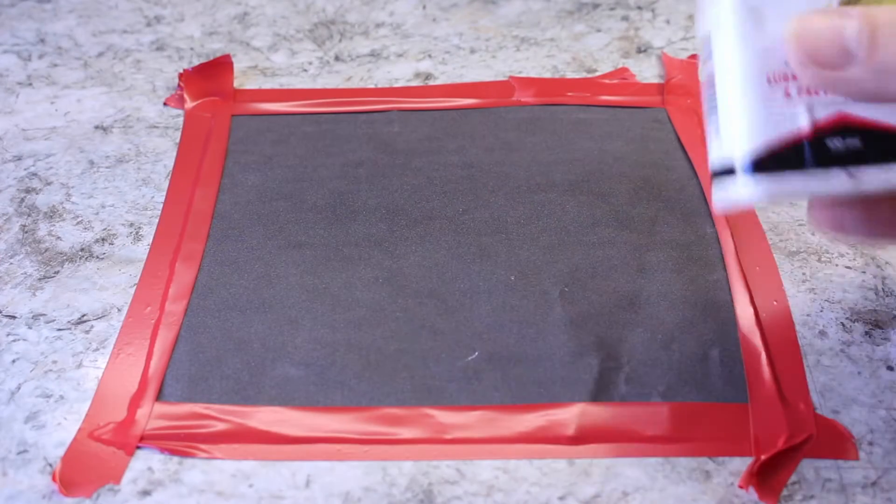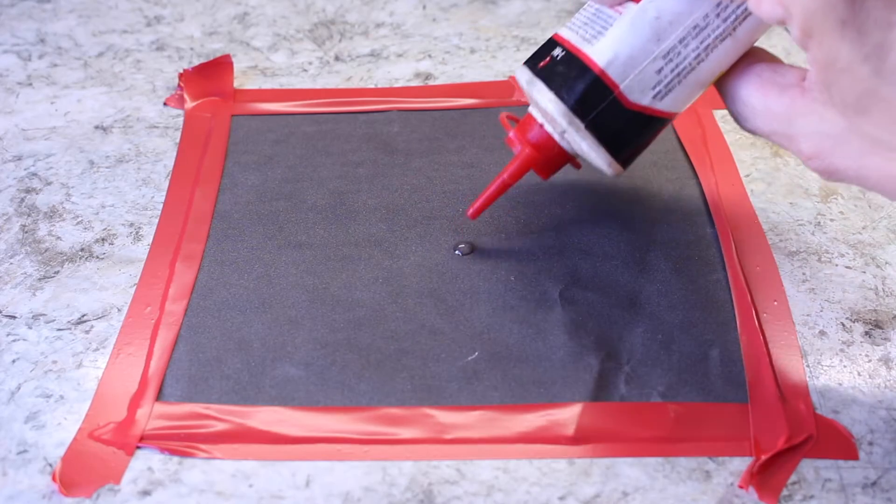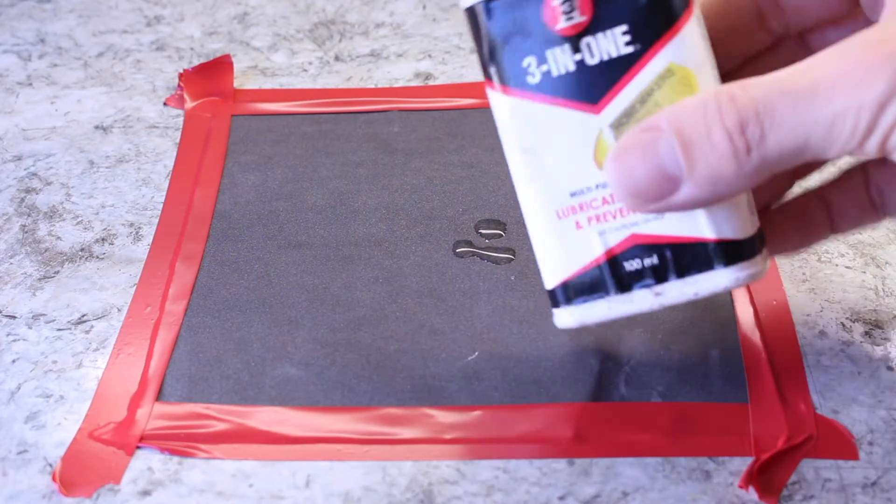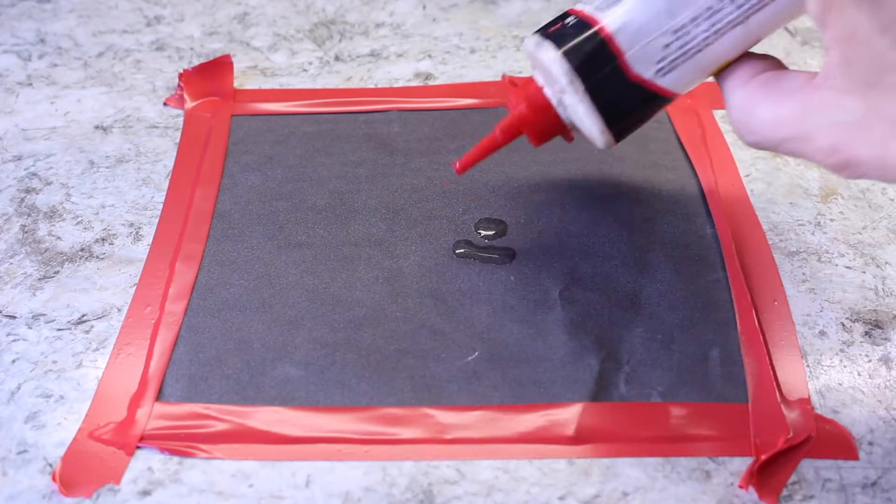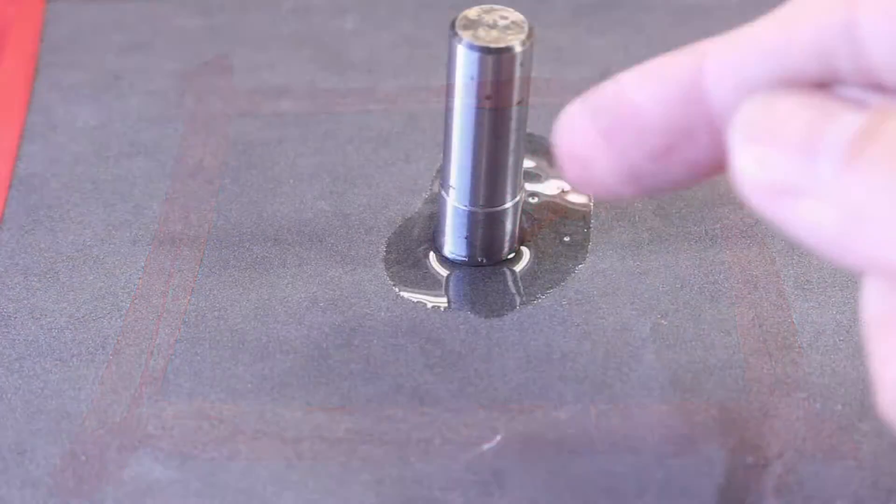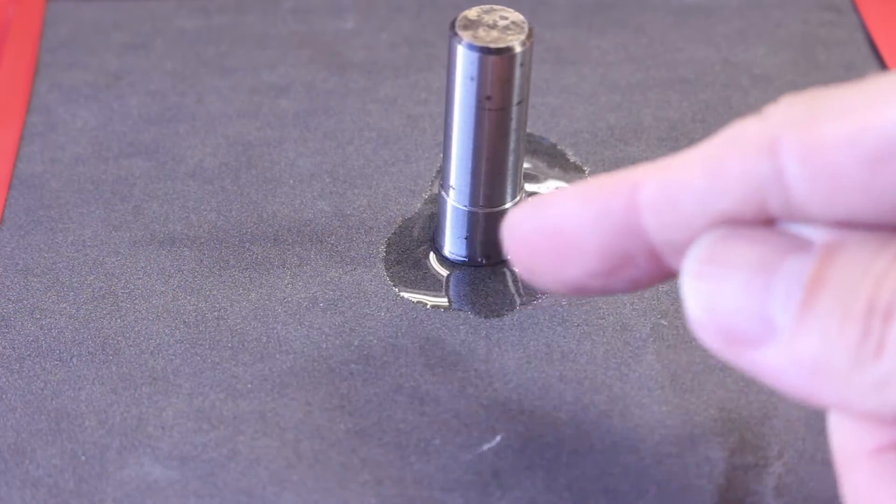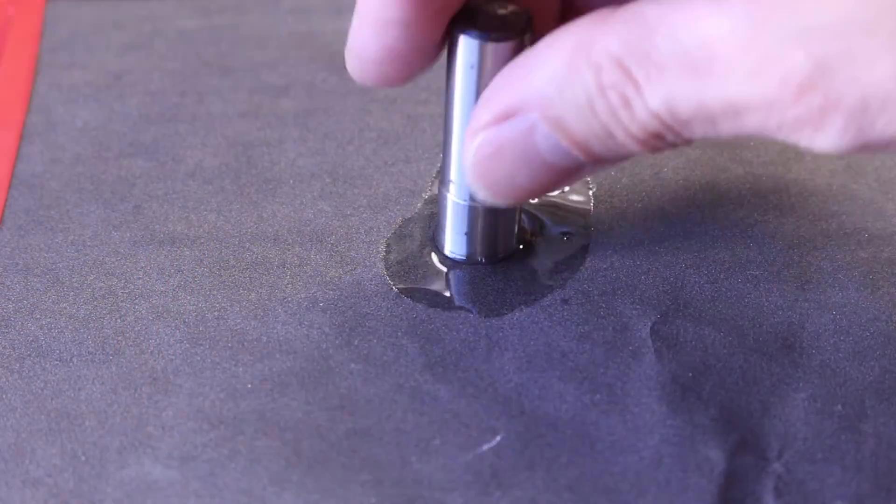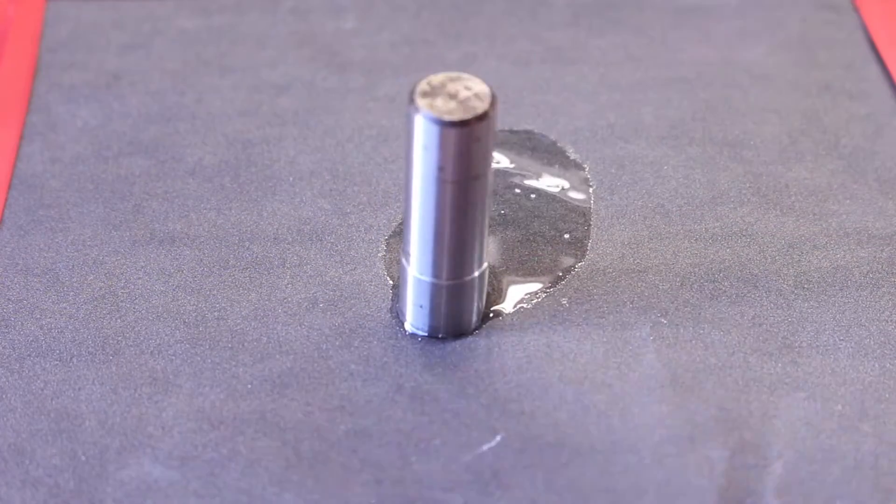Onto your emery paper, just add a couple of little drops of oil. This is just general household, general use little oil can. Remember that the face of the cutter is at a slight angle, so it's very important to keep the face of the cutter flat on your surface.